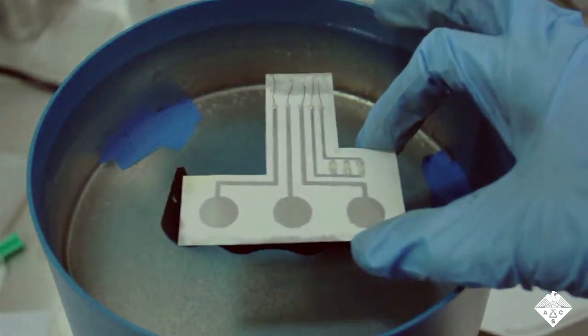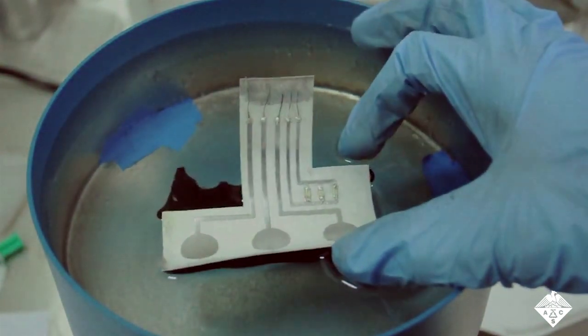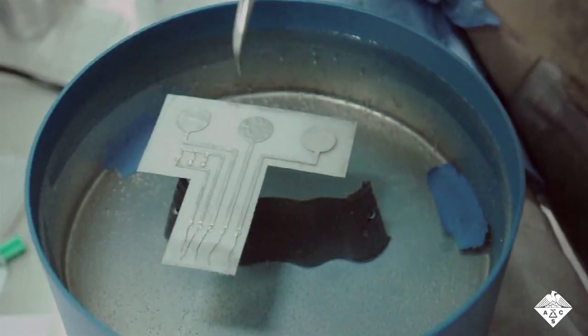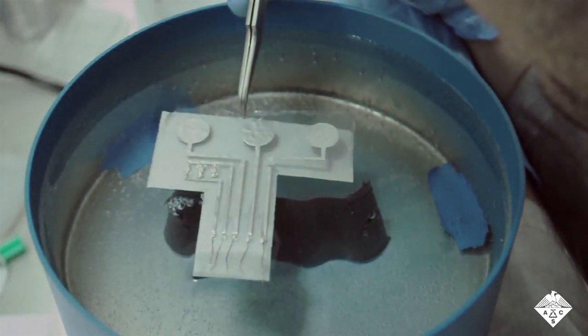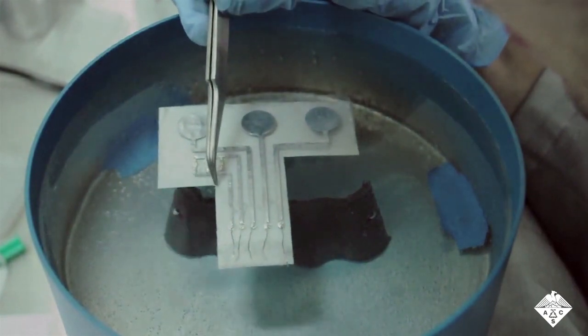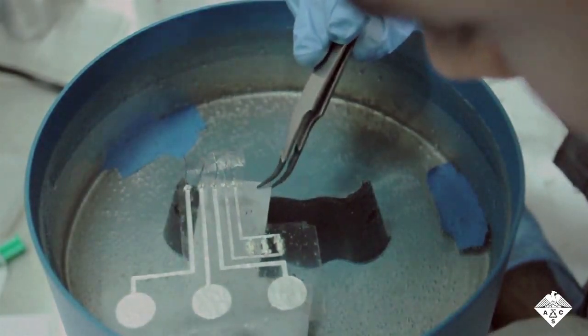The researchers used water to help transfer the electronic tattoo to 3D objects. They immersed an object in a tub of water and then placed a circuit on the surface of the water. The paper backing of the tattoo separated from the carrier film, which floated on the surface of the water.